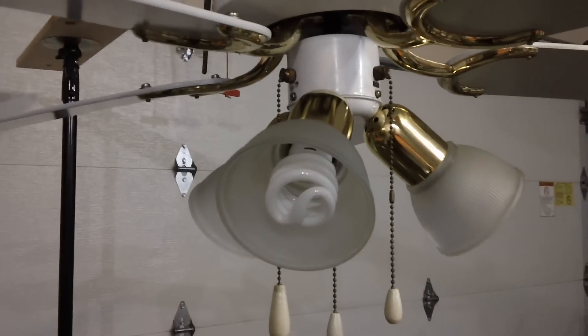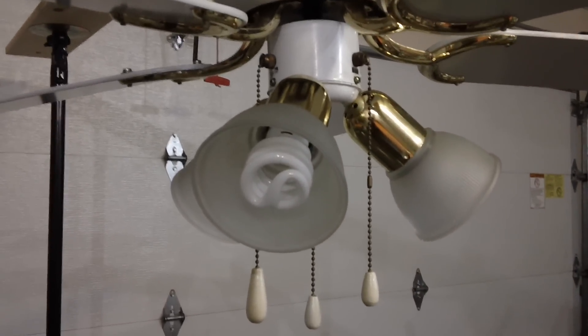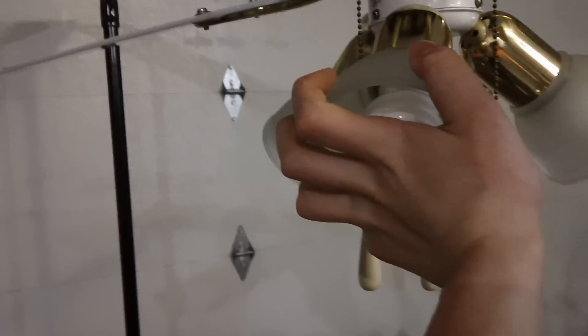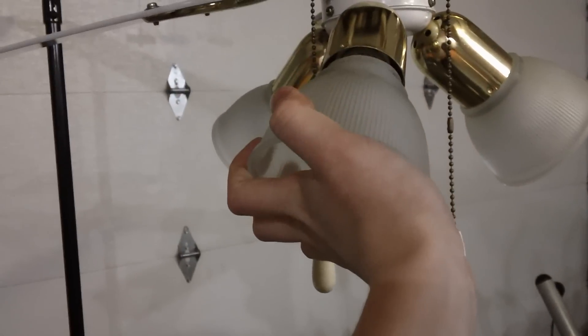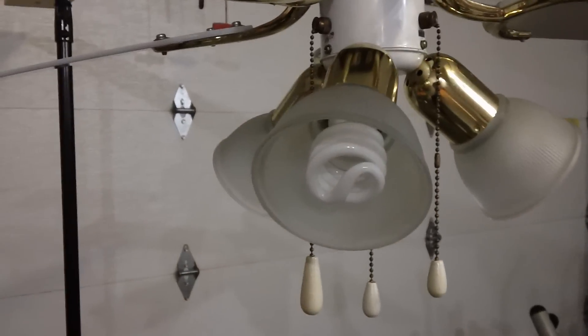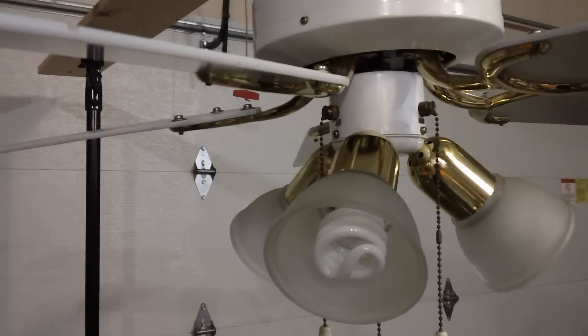Now I'm going to talk about the pros and cons. I really like the light kit on this fan. I think it's quite unique. The globes, as you can see, just twist off. That's how I put them on, just twist them. And that makes for easy cleaning. That's definitely a pro.